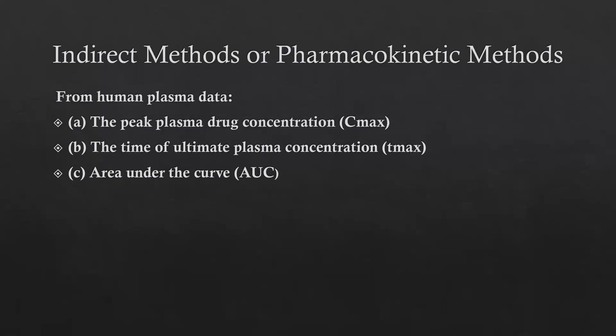First is the peak plasma drug concentration, that is Cmax. Second is the time of maximum plasma concentration, which is called Tmax. Third is the area under the curve. So bioavailability is assessed from human plasma data and also from urinary excretion data.